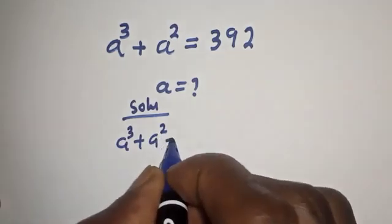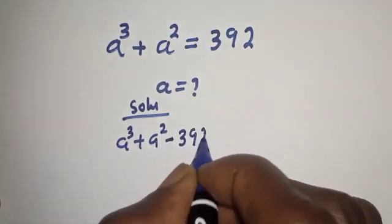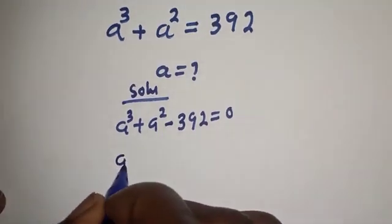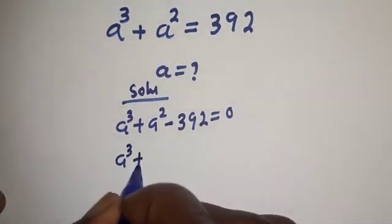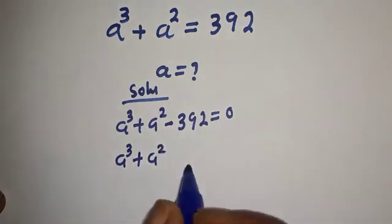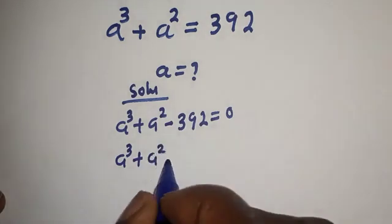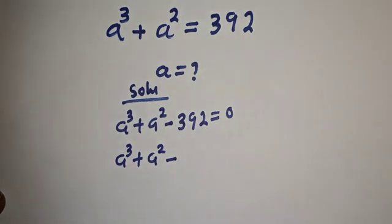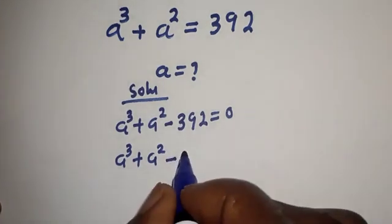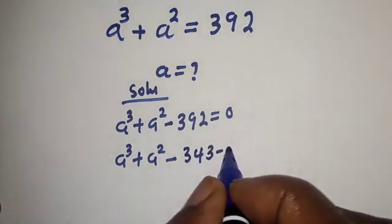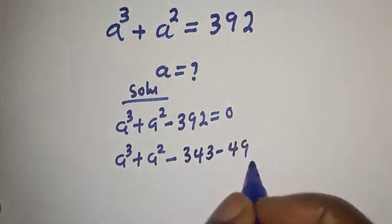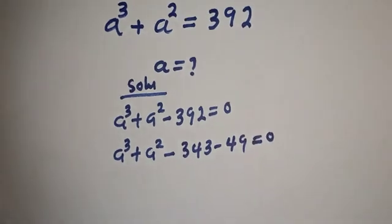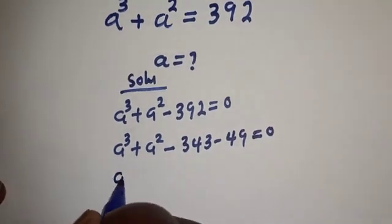Let's bring this to this side: a raised to power 3 plus a squared minus 392 is equal to zero. Now a raised to power 3 plus a squared minus 392 can be written as minus 343 minus 49 is equal to zero.